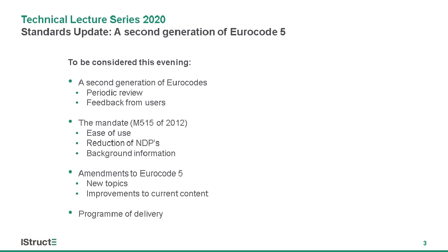Usually it's about a five-year period for each review cycle, which is the same with British standards. With Eurocodes, the first standards were released around 2002 to 2004, and in the case of Eurocode 5 there was Amendment 1 in 2009 as a result of user feedback, and then in 2014 we released the second amendment, which is the current version.